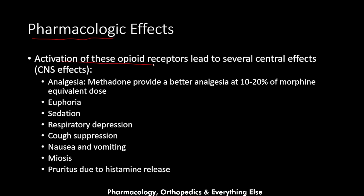Regarding the pharmacological effects of methadone: when methadone activates the opioid receptors it leads to several central effects, including analgesia. Methadone provides better analgesia at 10 to 20 percent of the morphine equivalent dose, meaning that methadone is approximately 10 times more potent than morphine. It also leads to euphoria, which is a pleasant sensation, and sedation, which makes the patient drowsy.